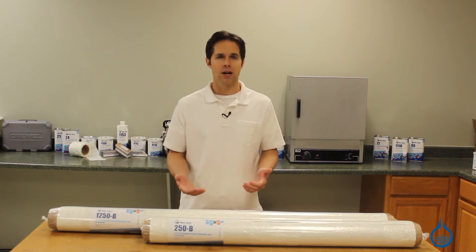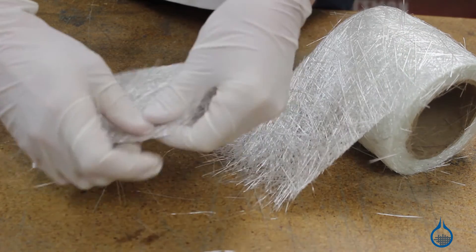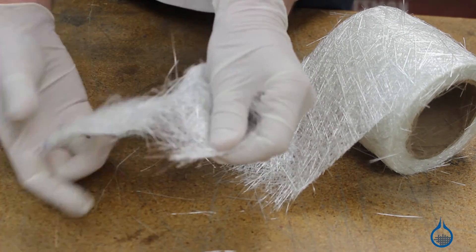Fabricators usually tear Chopped Strand Mat rather than cut it. This maintains the length of fibers along the edge and helps to create stronger bonding with other layers.